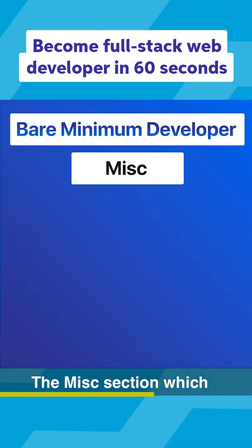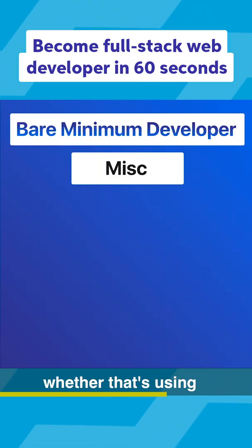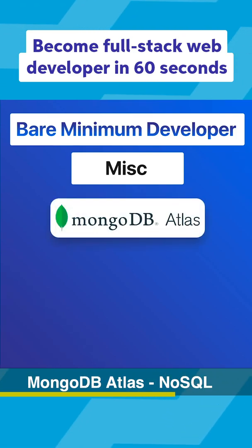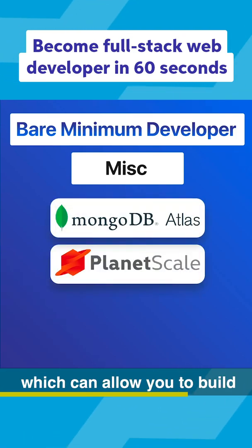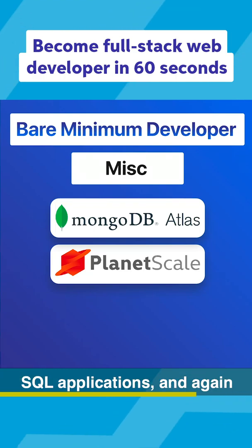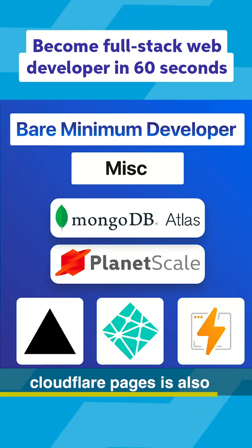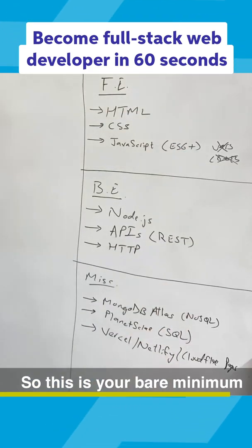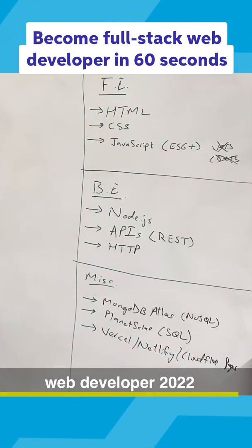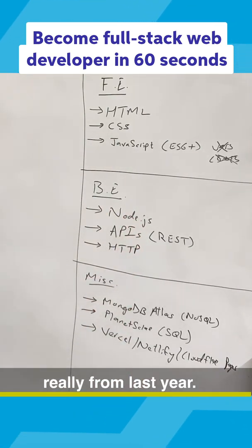Then finally, the miscellaneous section, which would also include databases — whether that's using MongoDB Atlas, NoSQL, or something like PlanetScale, which can allow you to build SQL applications. To host your frontend, there's Vercel or Netlify. Cloudflare Pages is also one interesting option. So this is your bare minimum web developer 2022 tech stack — nothing has really changed from last year.